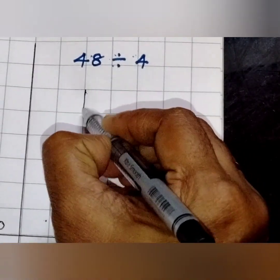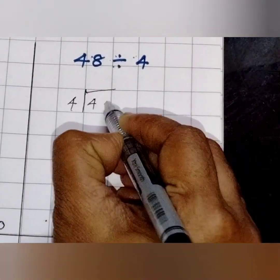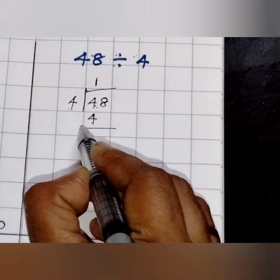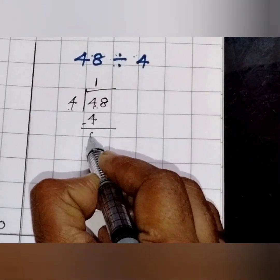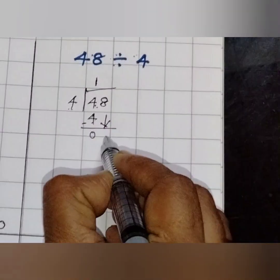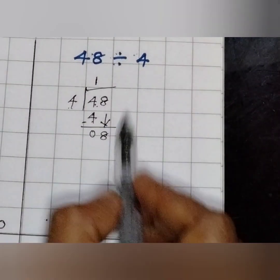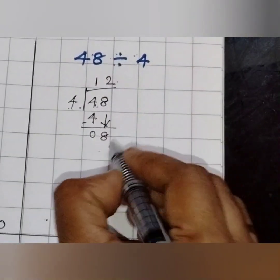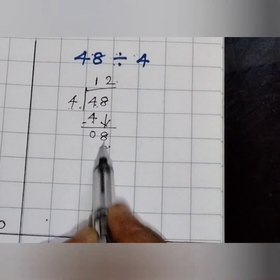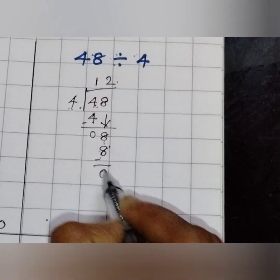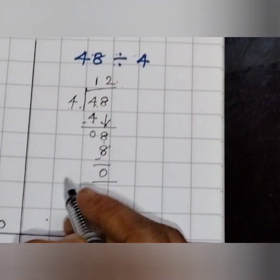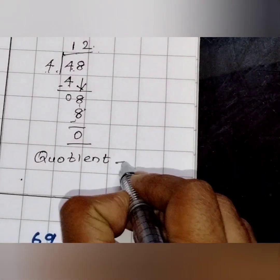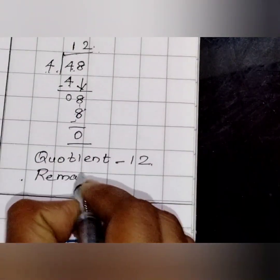Next question: 48 divide by 4. Here we are taking 4 alone first. 4 ones are 4. 4 minus 4 is 0. Bringing down 8. 4 twos are 8. 8 minus 8 is 0. Since the divisor is 4, we took the first digit of the dividend alone. Our quotient is 12 and the remainder is 0.